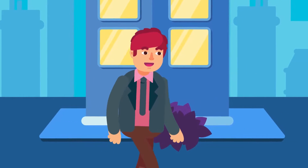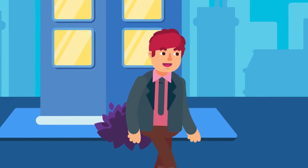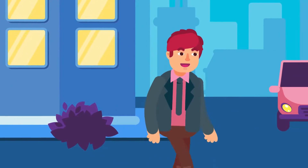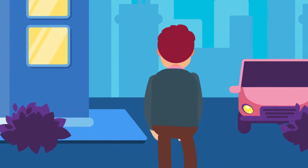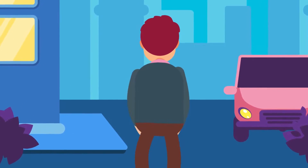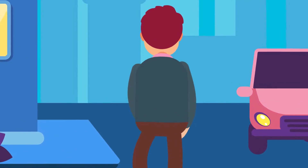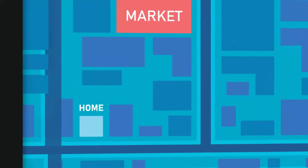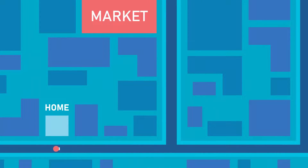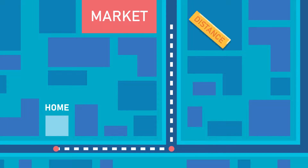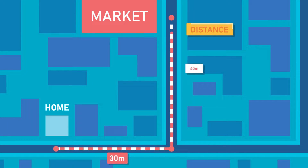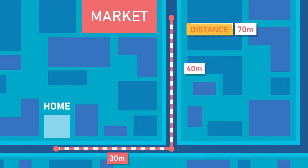Imagine we're going to the market by walking 30 meters straight and then taking a left turn for another 40 meters walk. The total length of path traveled can be defined as distance, and in this case 70 meters is the distance from our home to the market.